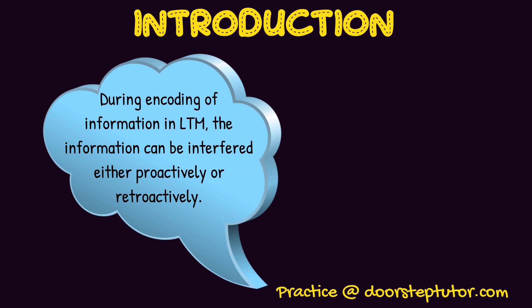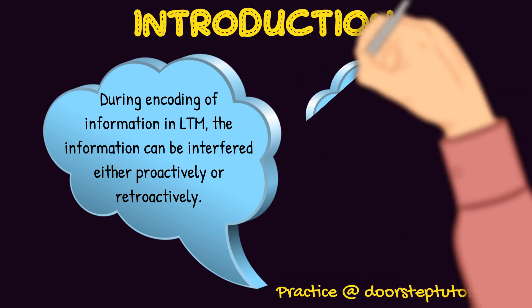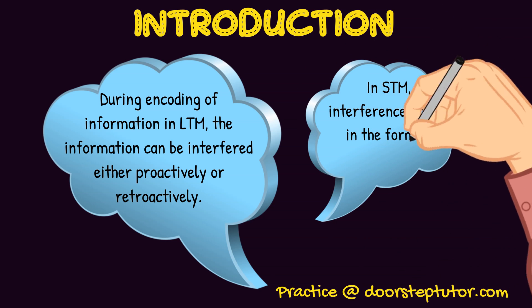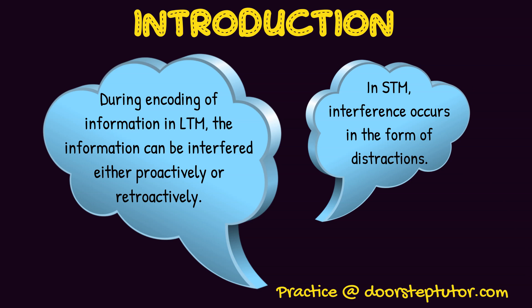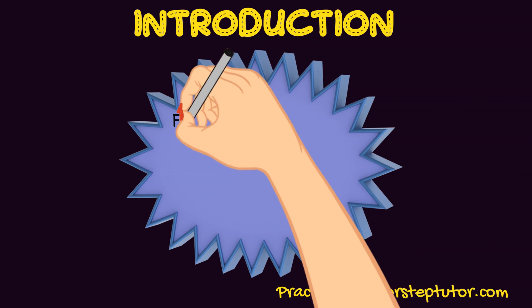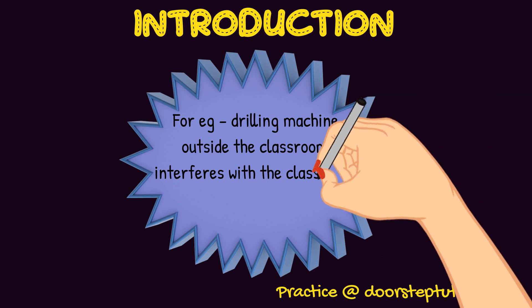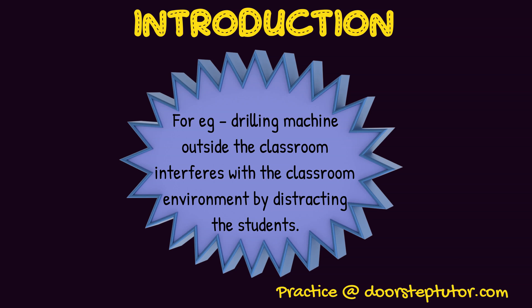During encoding, memory is either distorted or disrupted proactively or retroactively. Proactive interference and retroactive interference will be covered later in this presentation. According to this theory, interference is the reason for forgetting in long-term or short-term memory. In short-term memory, interference is described as small forms of distraction, like if a drilling machine or high-sounding machine is used outside a classroom, it may distract students and interfere with their studies.